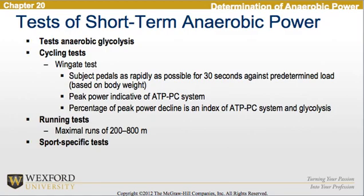Moving on to tests of short-term anaerobic power to test anaerobic glycolysis: cycling tests involve the Wingate test, where the subject pedals as rapidly as possible for 30 seconds against a predetermined load based on body weight. The peak power indicator reflects the ATP-phosphate system, and the percentage of peak power decline is an index of the ATP-creatine phosphate system and glycolysis. Running tests involve maximal runs of 200 to 800 meters or sports-specific tests.